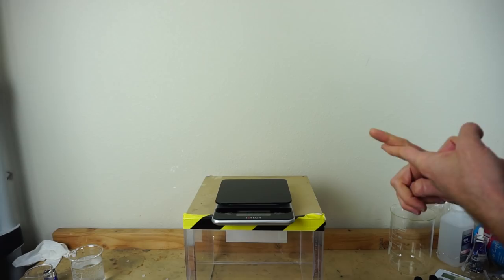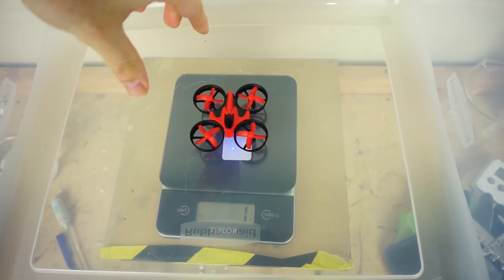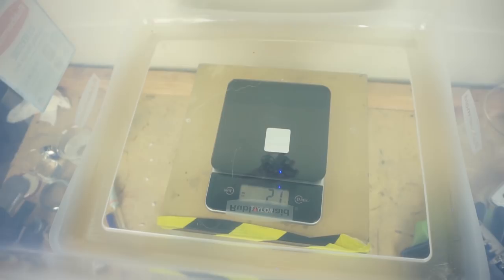First let's do a completely enclosed box. I have my drone in the Tupperware box here. I've zeroed it out right now, so let's see what happens when I lift the drone up. If I lift it up, it weighs 21 grams less. Set it back down, back to zero. So this drone weighs around 21 grams.